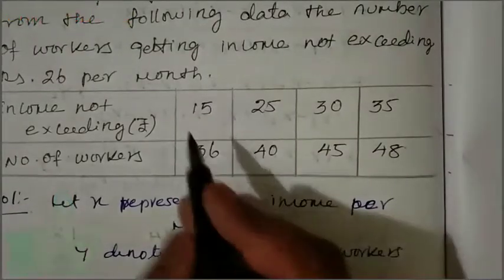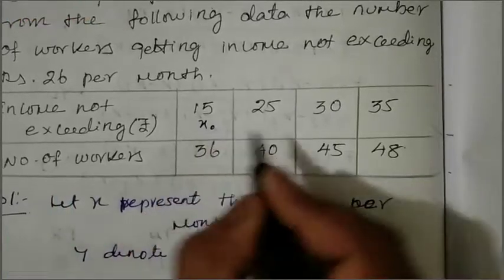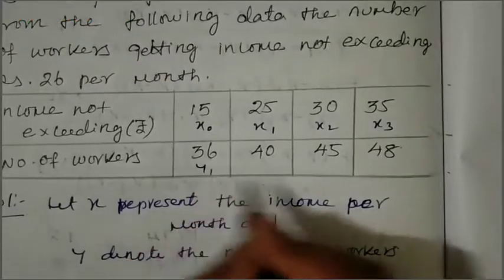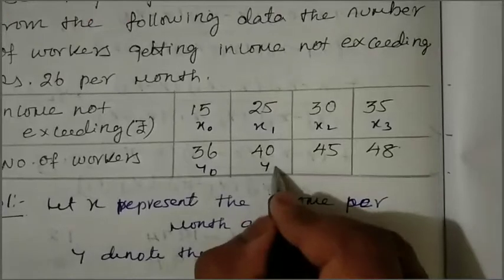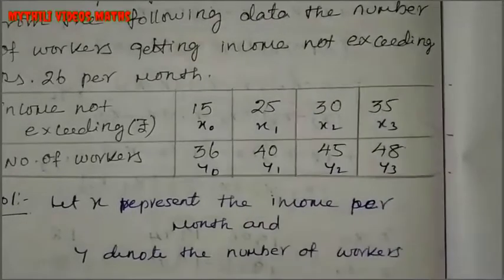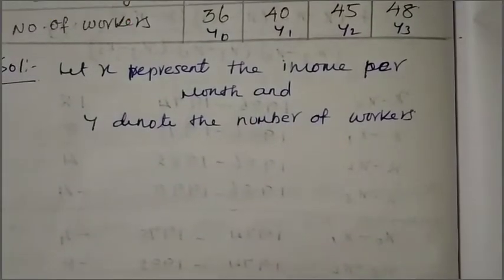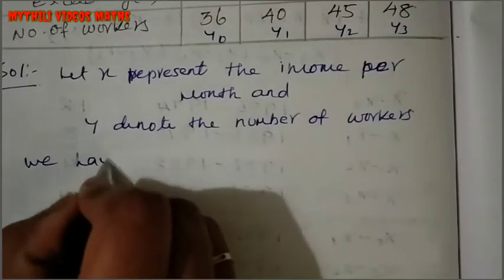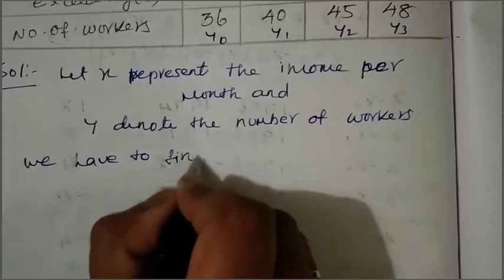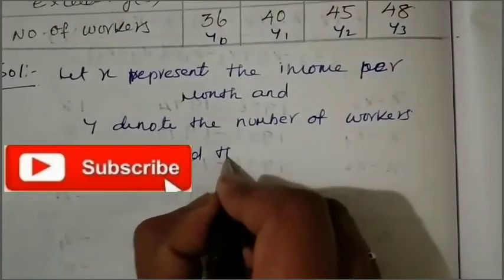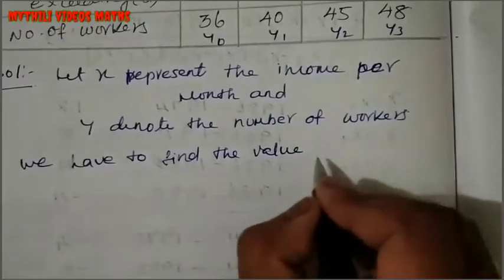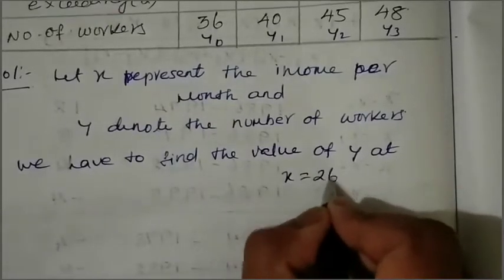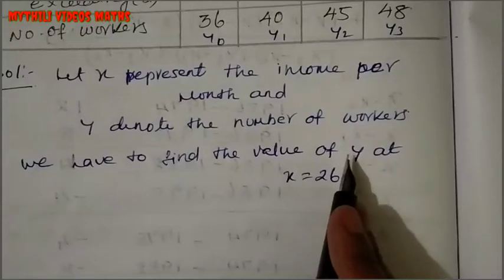That means Y0, Y1, Y2, Y3 corresponding to X0, X1, X2, X3. So the X values are X0, X1, X2, X3 and the Y values are Y0, Y1, Y2, Y3. We need to find the value of Y at X equal to 26.